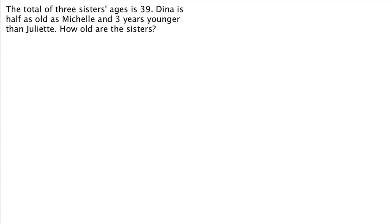All right, here we have another word problem. The total, and right away that means we know that we are putting things together. Another word for putting things together is sum or adding. Of three sisters ages is 39, and is is the equal sign. Dina is half as old as Michelle. So let D represent Dina's age. We're going to let M represent Michelle's age. And we know that Dina's age plus Michelle's age plus a third sister, Juliet. So let J represent Juliet's age.